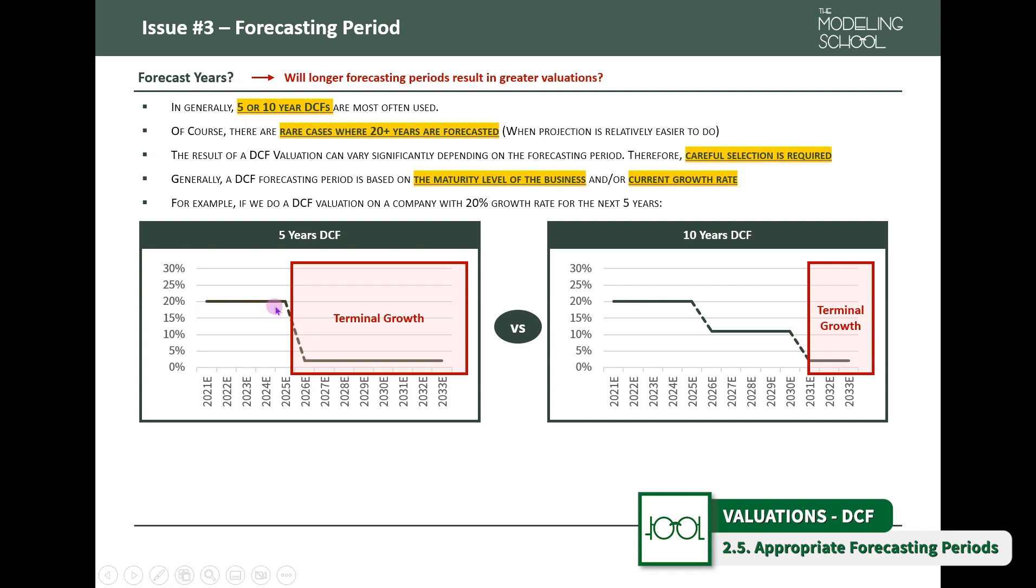Think, just look at how unnatural this growth trajectory seems, right? Growth rate of 20% and all of a sudden 1%. That's very unnatural. So in these cases, with higher growth rates, a 10-year DCF allows you to smoothen the growth rate's decline.